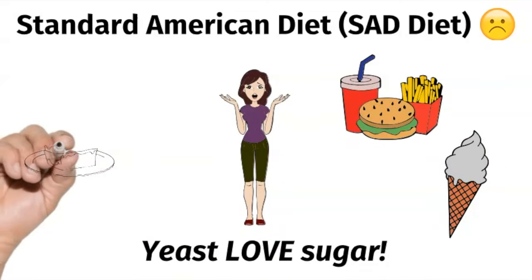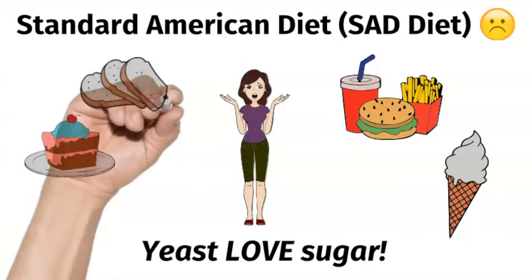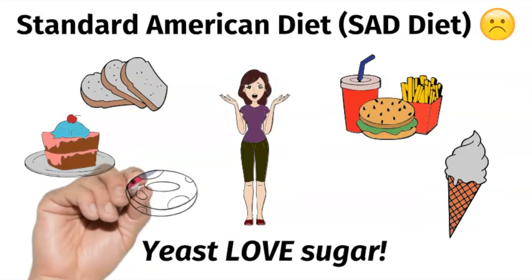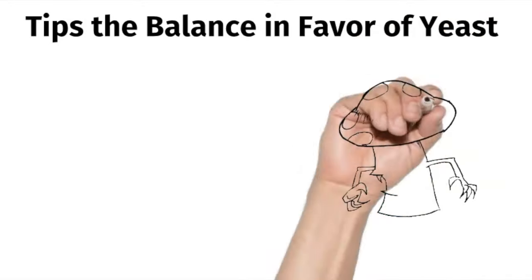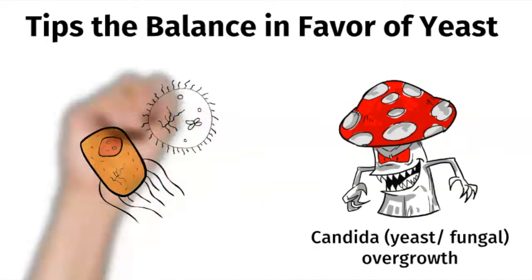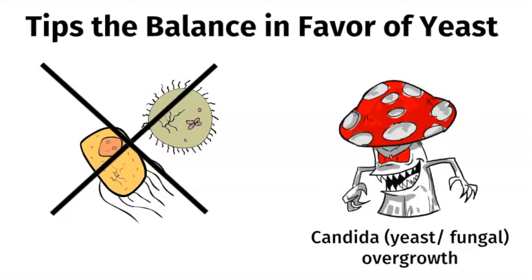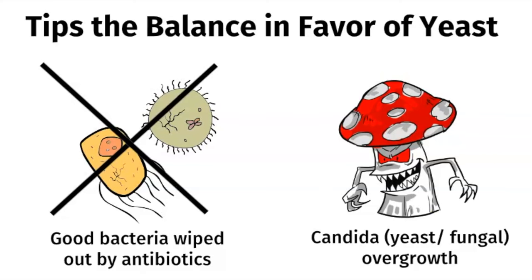Yeast loves sugar, and the standard American diet is loaded with sugar from all the soda and refined carbs like cookies, chips, breads, and donuts. This type of diet definitely tips the balance in favor of yeast. Disruption in the bacterial microbiome in any part of your body is a prerequisite for fungal overgrowth. Your good bacteria can get wiped out by antibiotics, and can also be affected by certain medications like steroids or synthetic hormones like birth control pills.